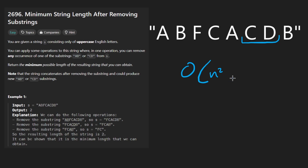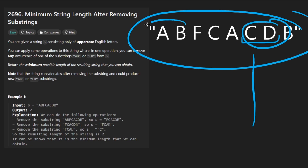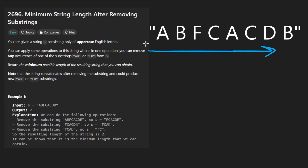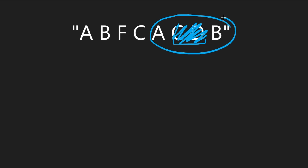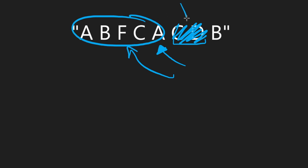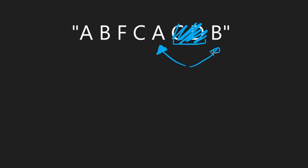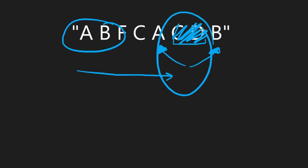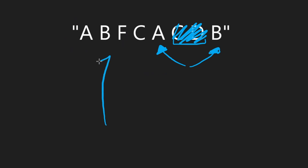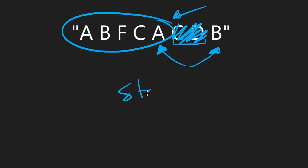Now the idea to do better is not super complicated. Rather than checking if those substrings exist across the entire string, we can scan through from left to right. The key insight is that if we remove a substring and form a new one, the new substring would only include the previous character and the character that comes directly after the removal. And if there are any occurrences we can remove from back there, by the time we get to this point we can expect they've already been removed.